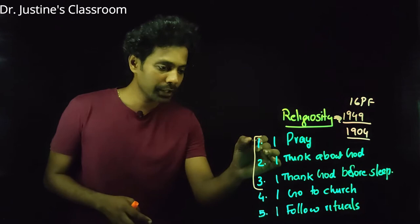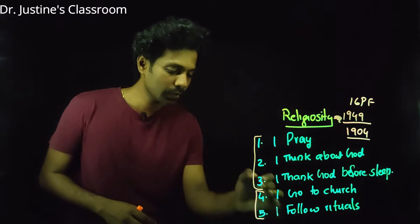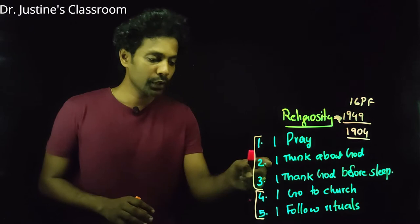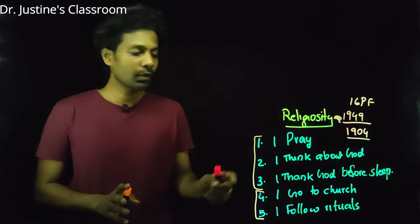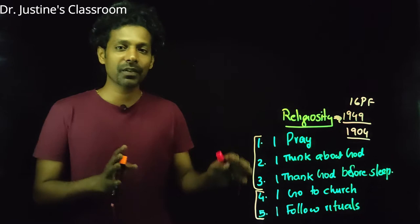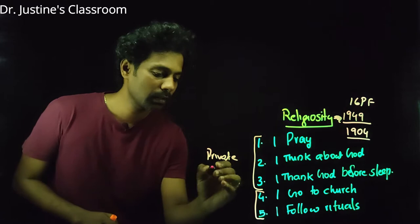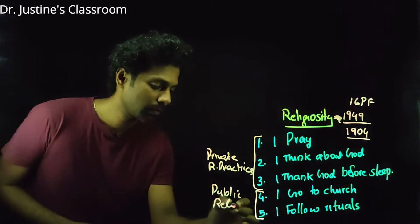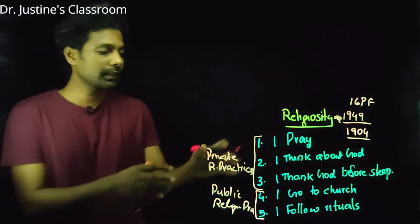The responses to these statements will follow a pattern. If I find the correlation among statements one, two, and three, and separately among statements four and five, I would find that correlations within each group are very high compared to cross-group correlations. Statements one, two, and three are measuring a similar aspect — I'm calling this 'private religious practices' — and four and five measure 'public religious practices.'